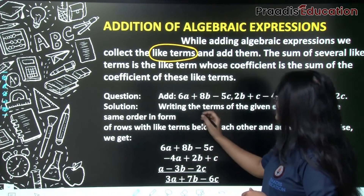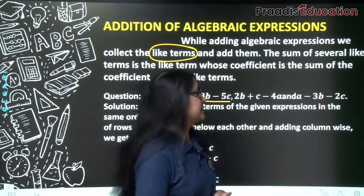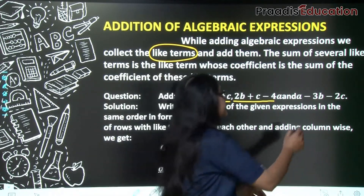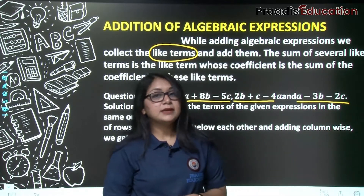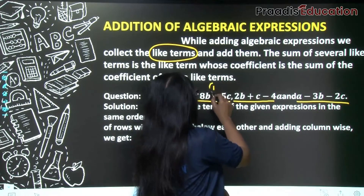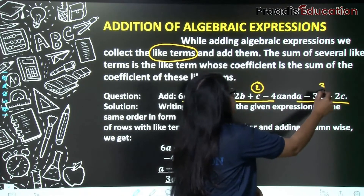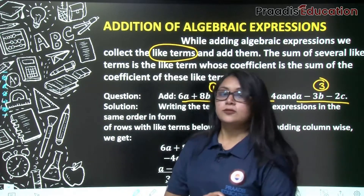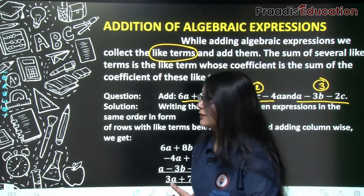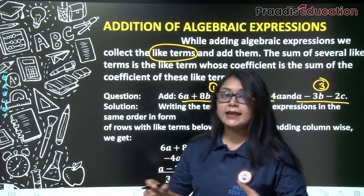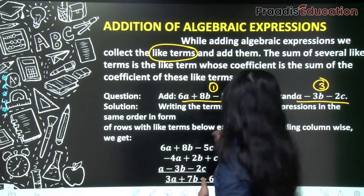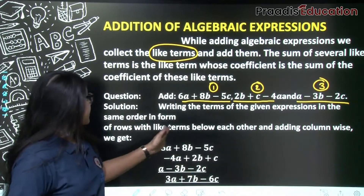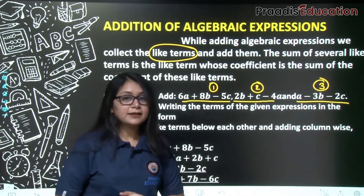Example: add 6a plus 8b minus 5c, next expression is 2b plus c minus 4a, and next we have a minus 3b minus 2c. So we are adding 1, 2, and 3 expressions. We need to add all these 3 algebraic expressions. First, we will arrange the expressions so that we can add the like terms.